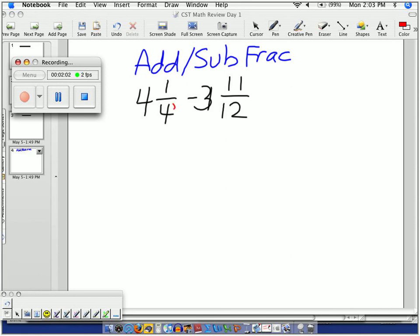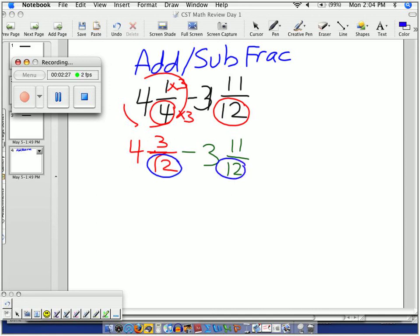Let's make common denominators. What do I do to 4 and 12? They both change to 12. So in order to do that, I multiply numerator and denominator by 3. So this has turned to 4 and 3 twelves. I'm going to subtract 3 and 11 twelves. I have permission to evaluate because they have common denominators now.